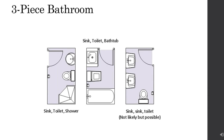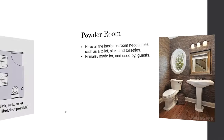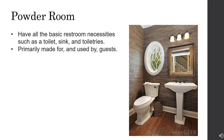A shower can be installed in a small shower stall or bathtub with a plastic shower curtain or door. A three-piece bathroom is a restroom with three plumbing fixtures — a sink and a toilet, plus one other fixture. A powder room has all the basic restroom necessities such as a toilet, sink, and toiletries, primarily made for and used by guests.